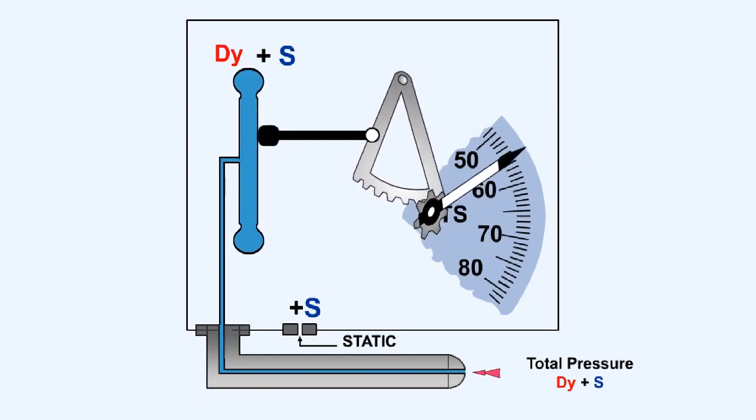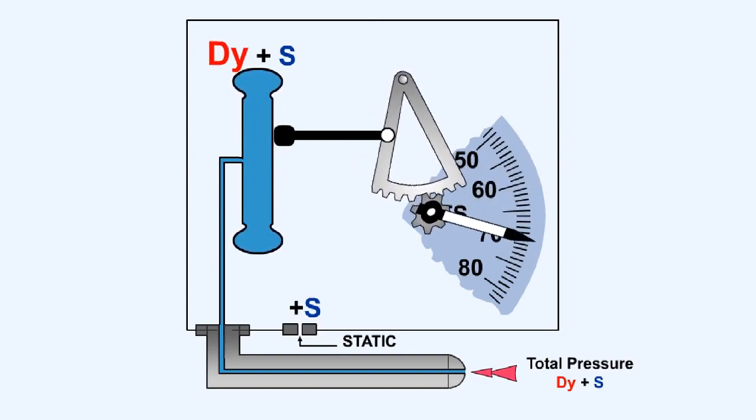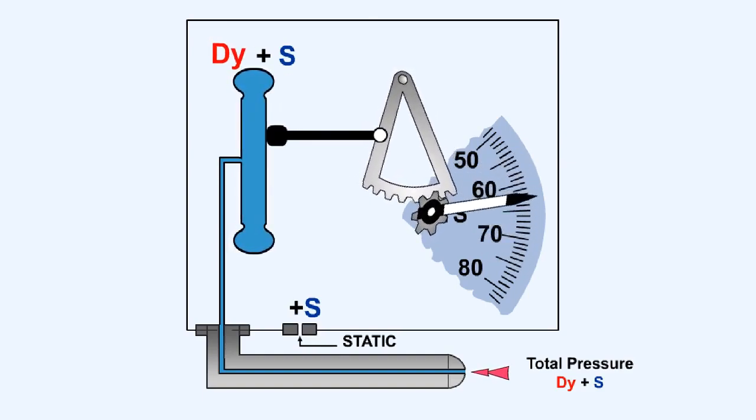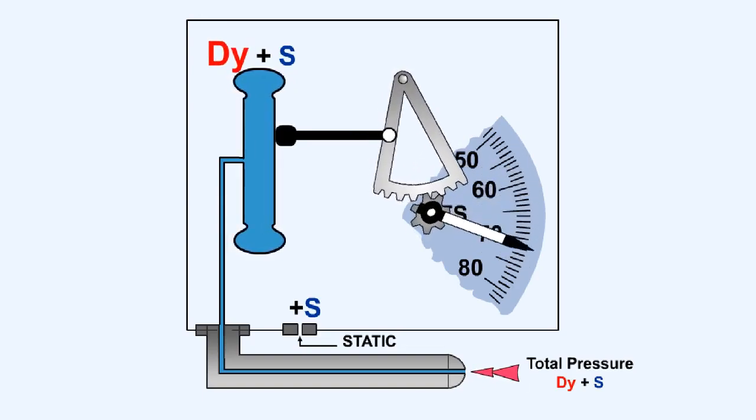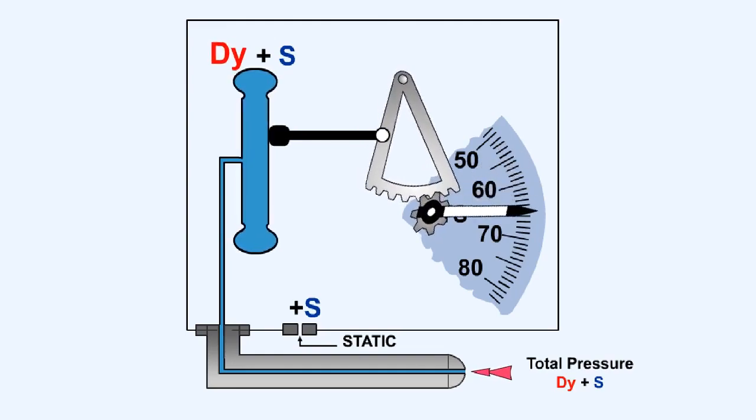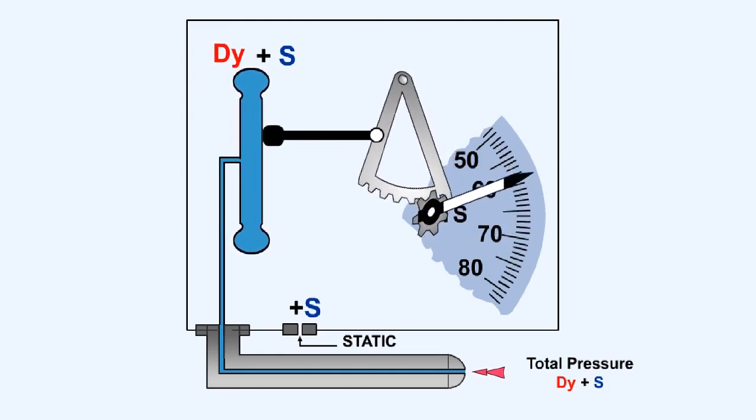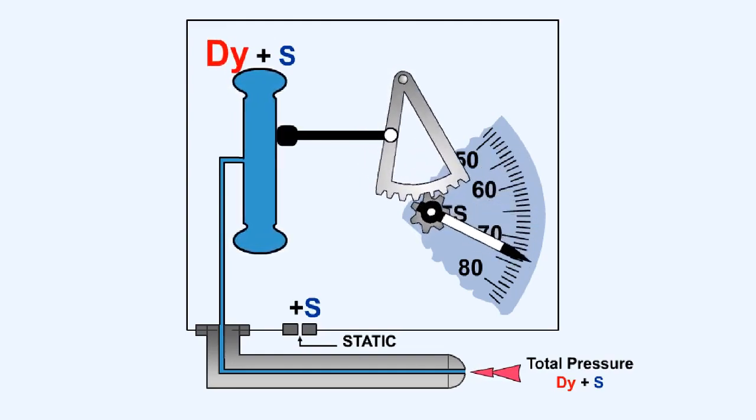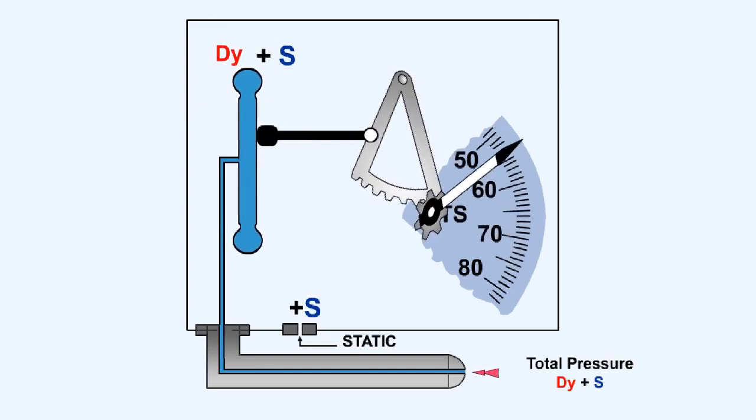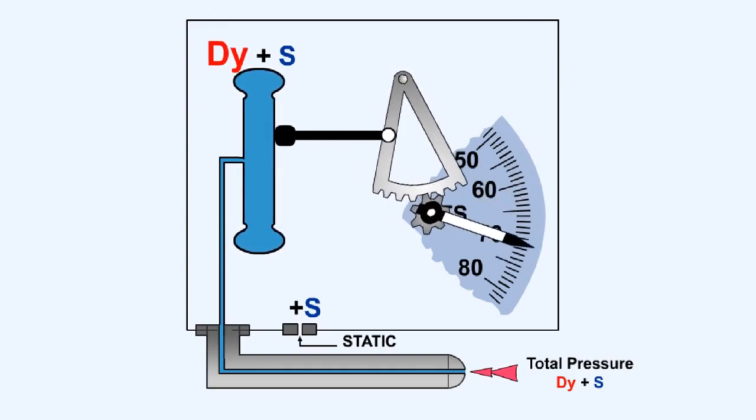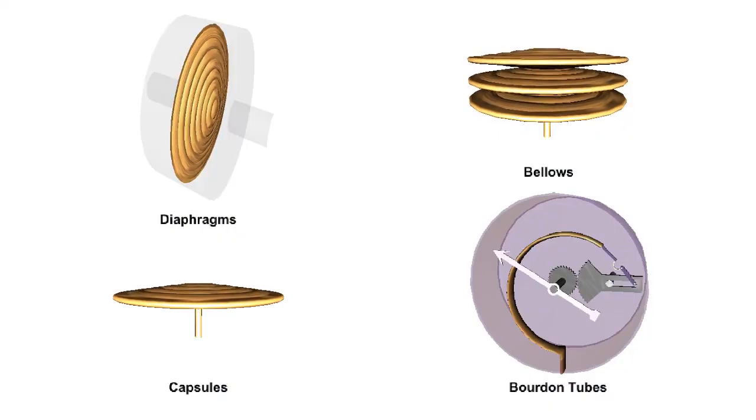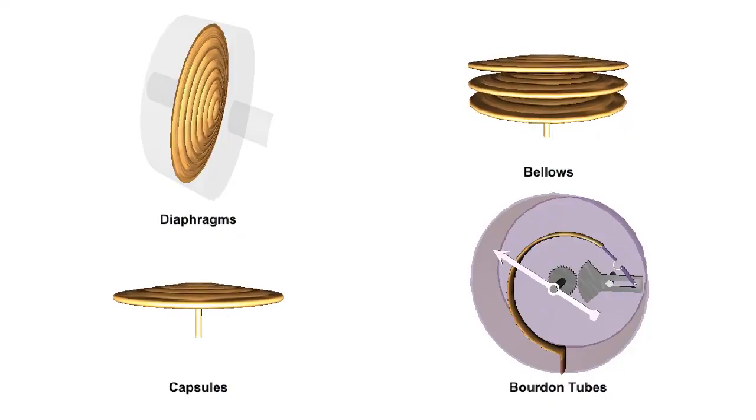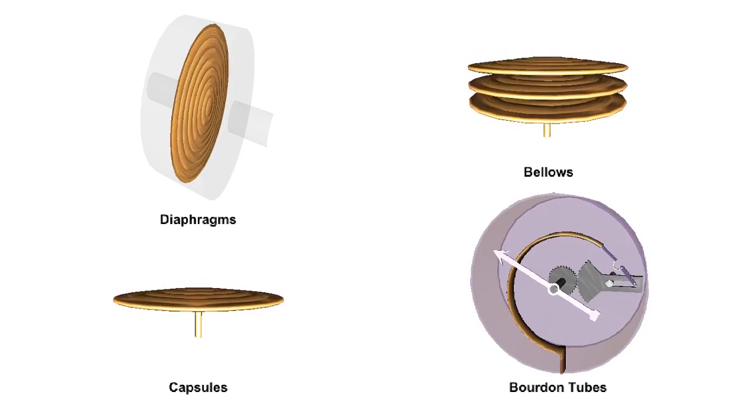Elastic pressure sensing elements are used to measure pressure. Forces are produced within the elements by applied pressures, and these forces are converted to mechanical movement. The mechanical movement is then used to operate either a direct reading gauge or an electrical transmitter. The sensing elements commonly used are diaphragms, capsules, bellows, and Borden tubes.